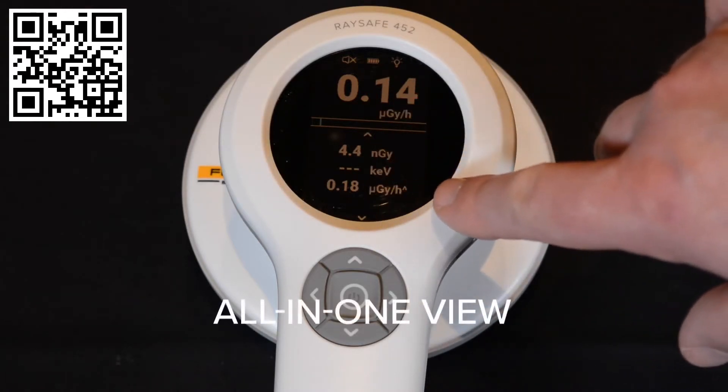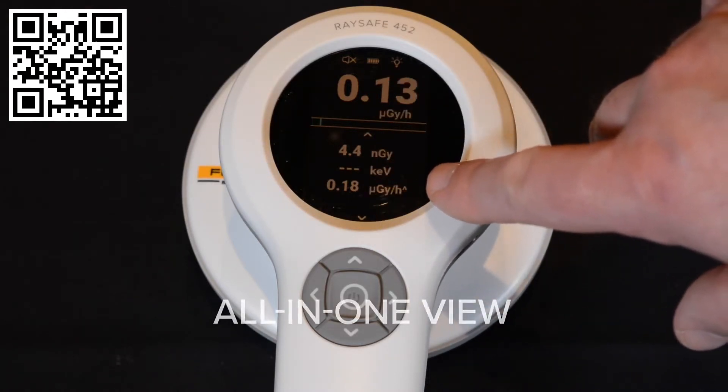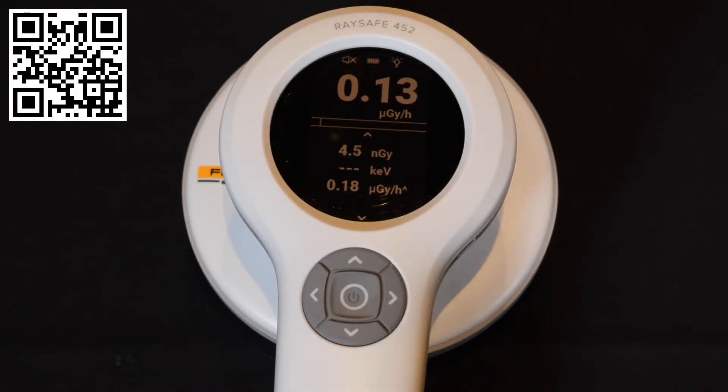When using other instruments, you might have several modes, but with the 452 you have everything all in one. There is no need to select anything. It's all automatic.